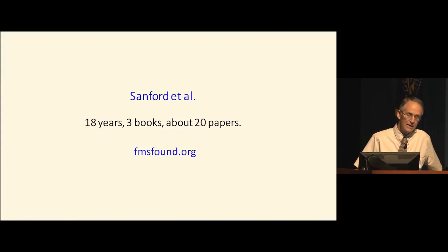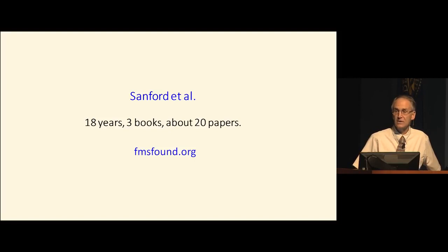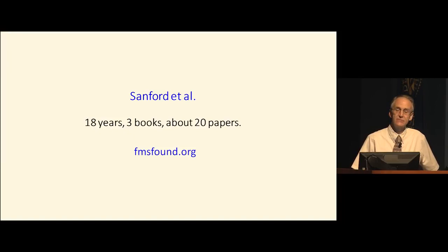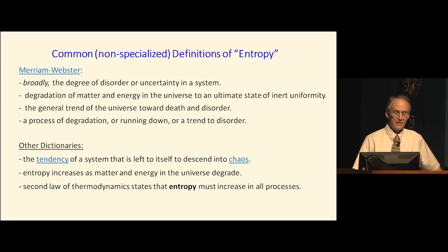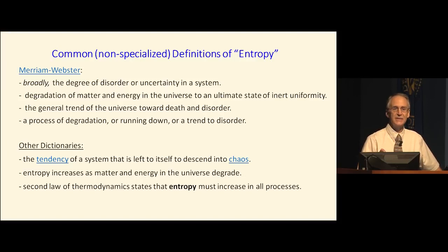My colleagues and I have been studying this for 18 years, resulting in about 20 scientific papers and three books. If you go to fmsfound.org, there are clickable links to all the relevant papers. I'd like to clarify a little bit of vocabulary. Some people say I'm misusing the word entropy. The term is used by physicists in a very specific sense, by engineers in a somewhat different sense, and by people in information theory also. I'm using entropy in the generic or common sense of the word.